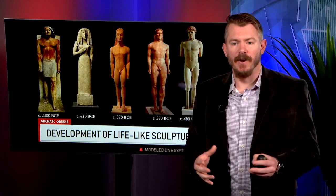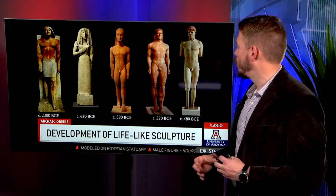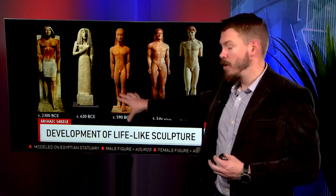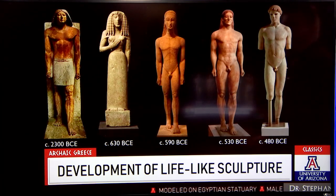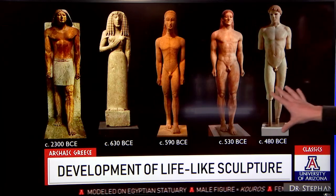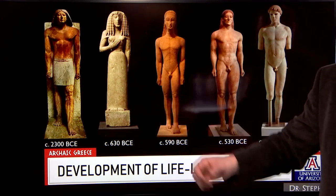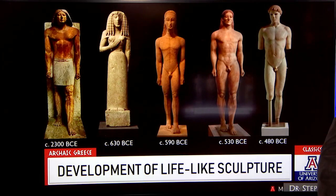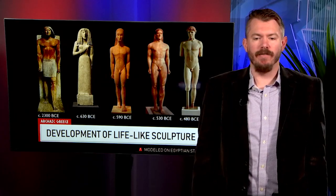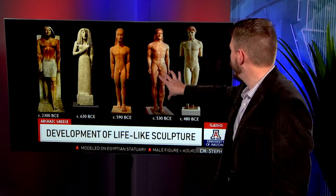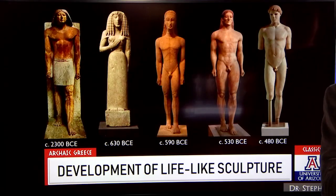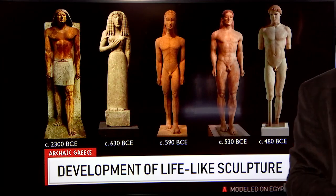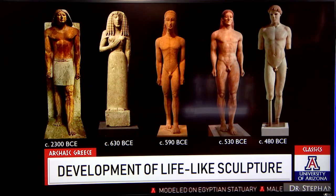During the Archaic period we get two prototypical types of Greek sculpture in human form. The male version is called the Kouros (K-O-U-R-O-S), and the female version is the Kore (K-O-R-E). As things move later in time, we see a move away from the super stiff posture — rigid form, arms by the side, one foot forward — towards something more lifelike. The Kritios Boy at the end is the missing link between Archaic sculpture and what we get in the classical period, where things look extremely fluid and lifelike.